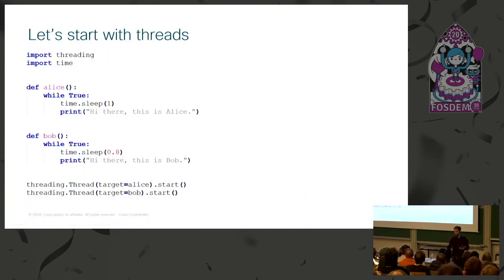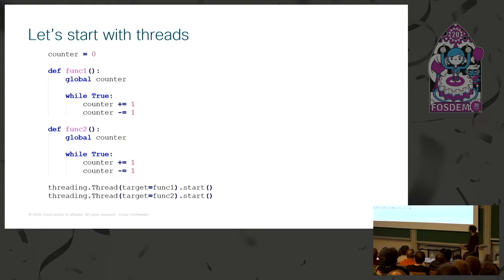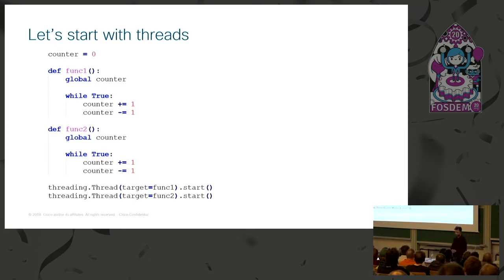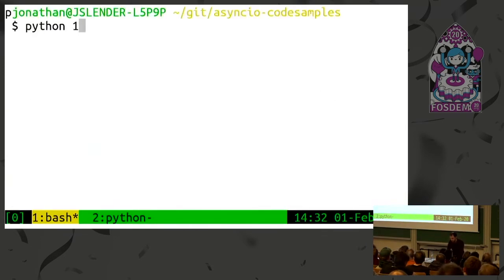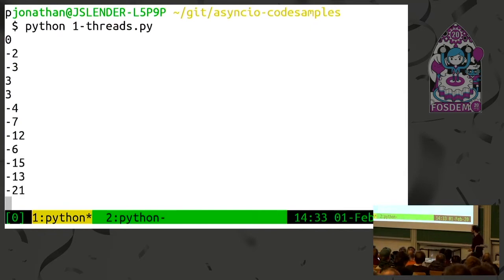Things become more complex if these threads have to coordinate with each other and exchange data. In this example there's a global variable, counter, and both threads are trying to manipulate that variable — first doing an increment, then a decrement. What you would expect is that for every increment we do a decrement, so if we print the value at regular points in time, we would always print 0, 1, or 2. But that's not exactly the case — we see negative values, and as we go on we diverge more and more from 0.